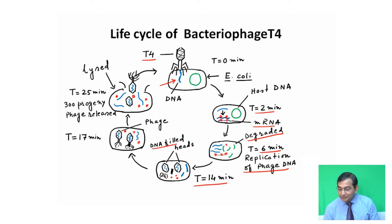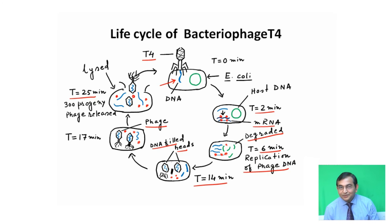Then, at 17 minutes, complete phages are formed. At 25 minutes after injecting DNA, about 300 mature progeny phages are formed. They are released after lysis of the cell wall. The cell wall is lysed by an enzyme, lysozyme, which is secreted by the bacteriophage.